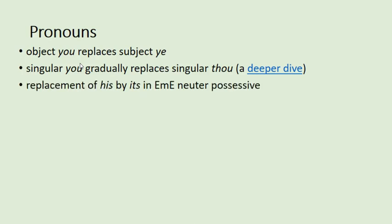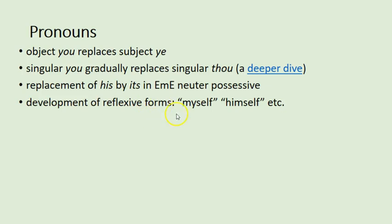We also get the replacement of 'his' by 'its' in the early modern English neuter possessive. For example, you'd say 'see that tree? His branches are waving' — that was the neuter form — but that gets replaced by 'its' in early modern English. 'Its' is actually a new form that doesn't exist earlier; it's formed by analogy. We also get the development of reflexive forms: myself, himself, yourself. In Chaucer you'd say 'I, me' or 'he, him saw in the mirror,' but in the early modern period we get 'I like myself,' 'he saw himself,' etc.